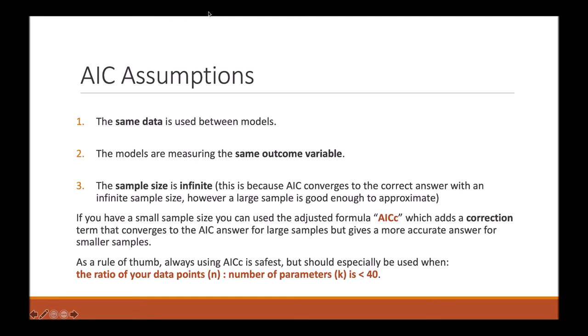As a rule of thumb, always using AICC is safest, but this correction should especially be used when the ratio of your data points and the number of parameters is less than 40.